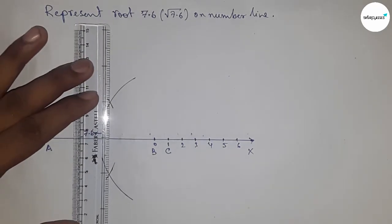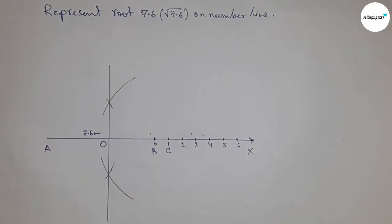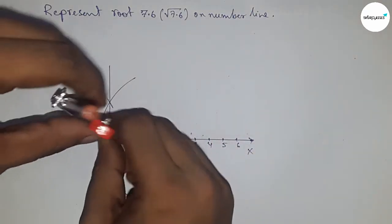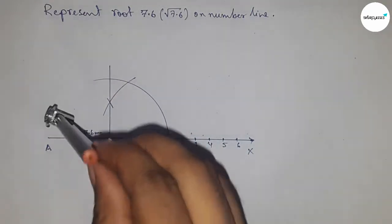Join these, which meet at point O. Now take the distance OA and OC to draw a semicircle.